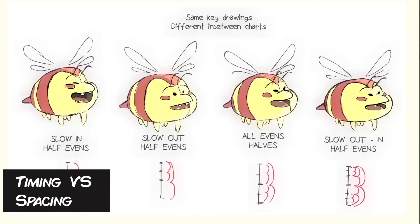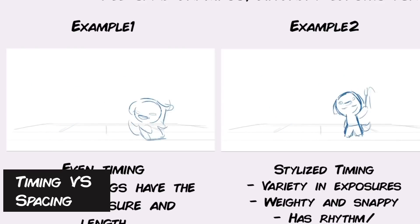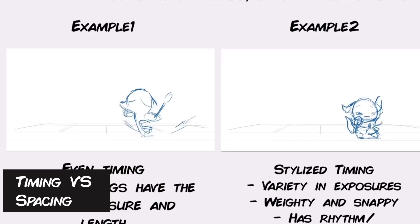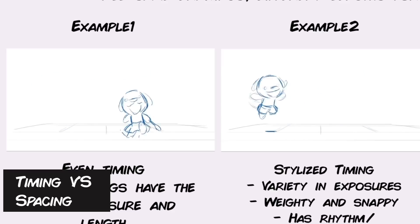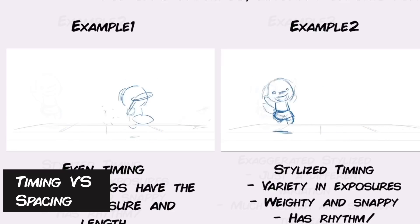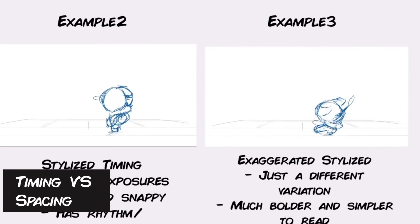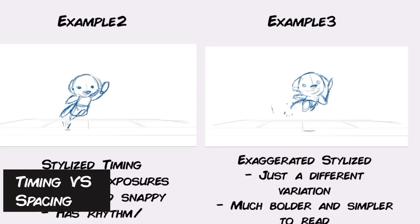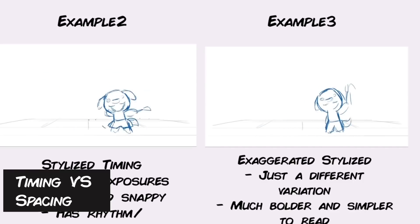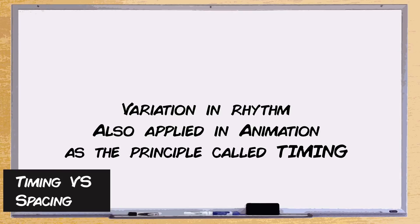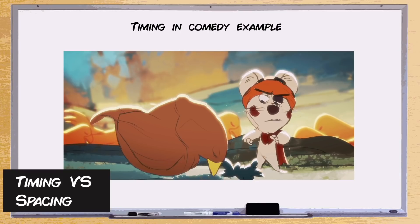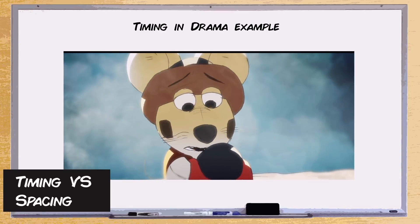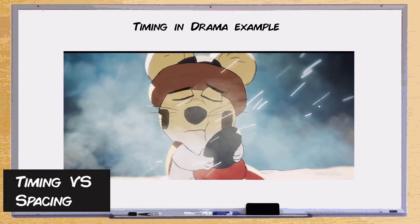Both of these animations have the same number of drawings, frames, and in-betweens, but I can change the timing for each. One has a longer hold at the beginning, some parts are more stylized than others, and you can get away with so much just by playing with timing — how long each idea or drawing is held, or how fast they go by. I'm essentially changing the rhythm of each animation. And rhythm — that's what timing is. It has nothing to do with the spacing or the drawings themselves, but just how much time you distribute for each idea.